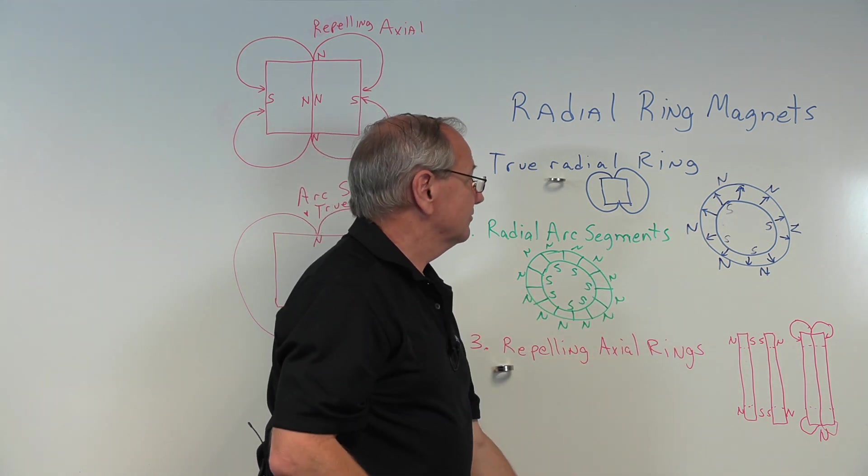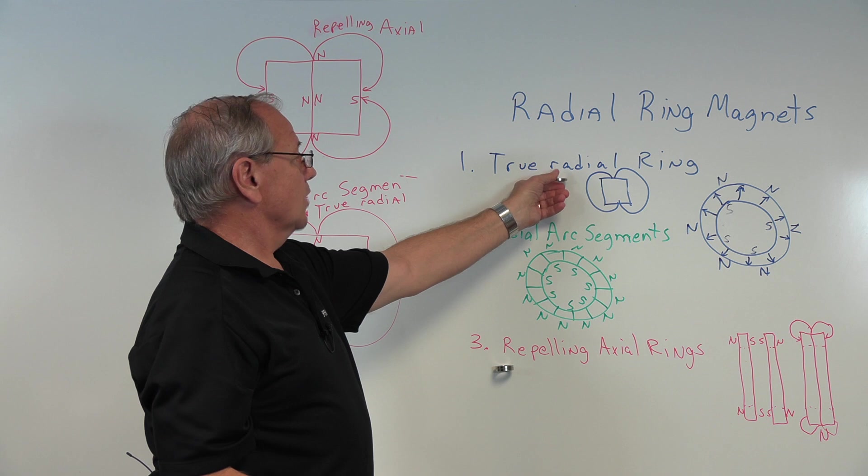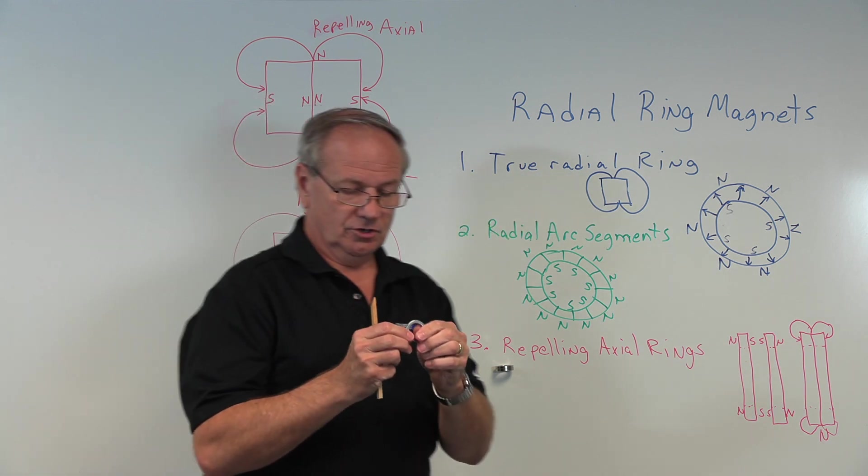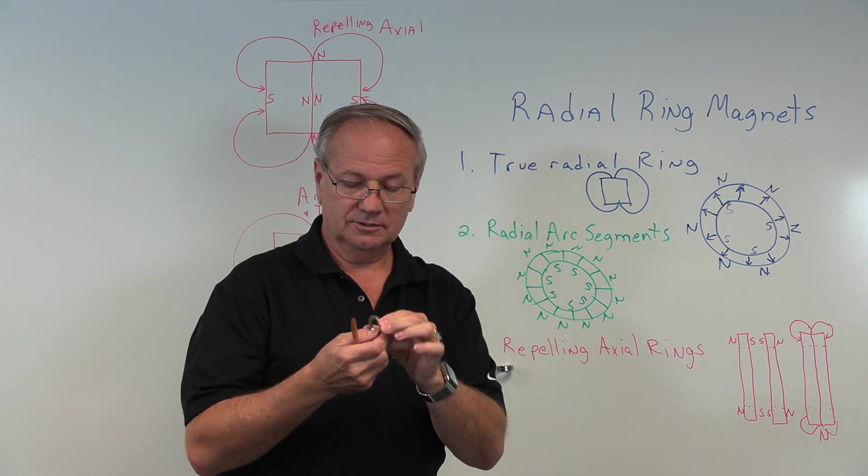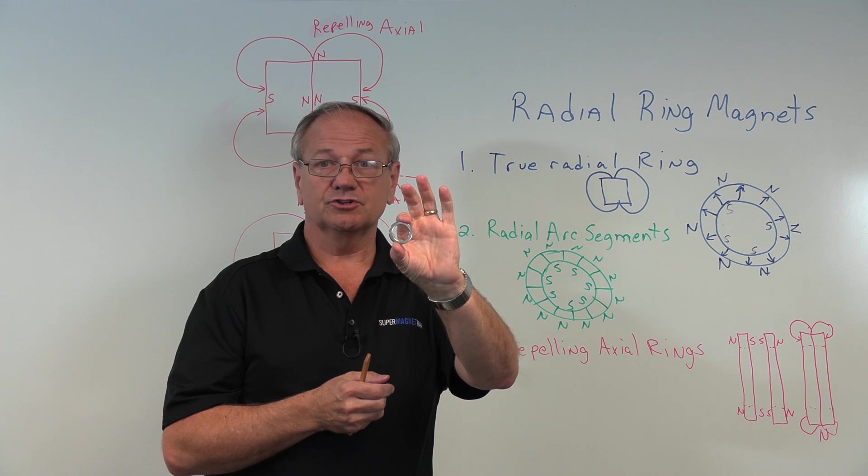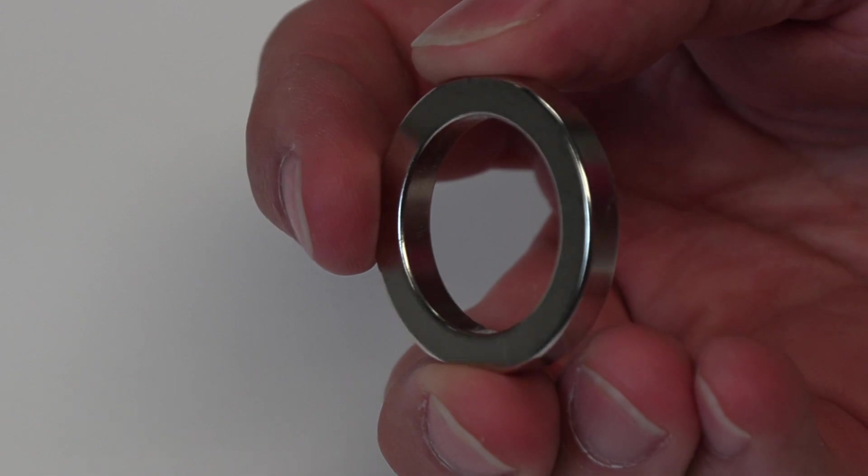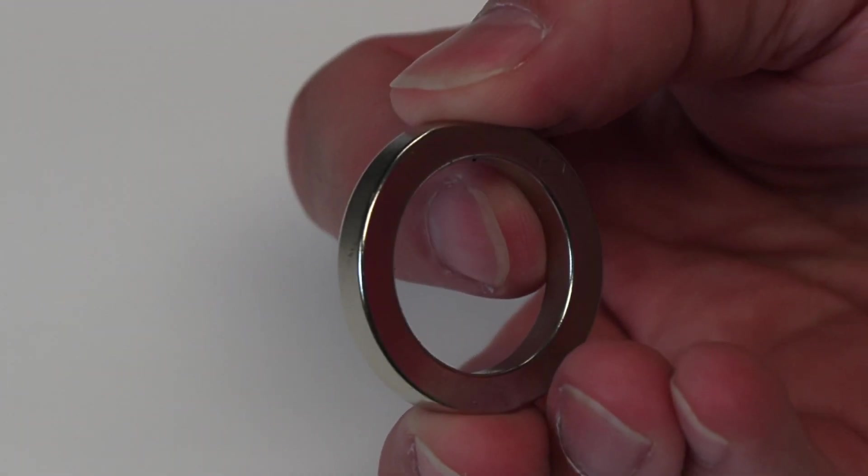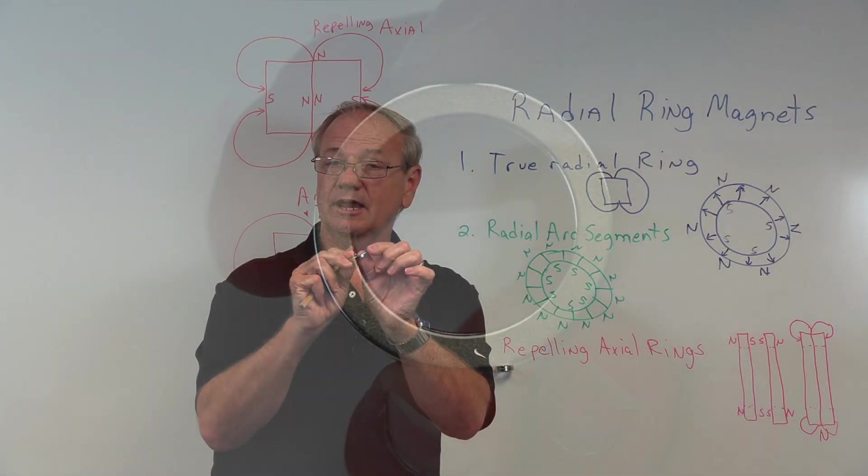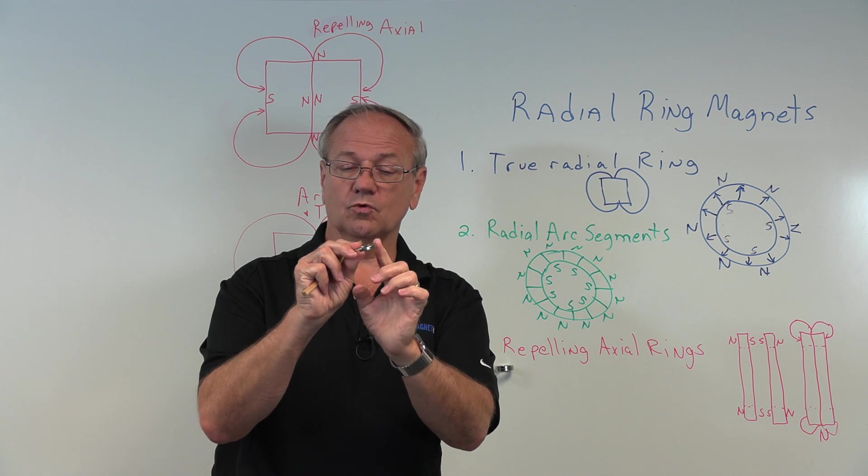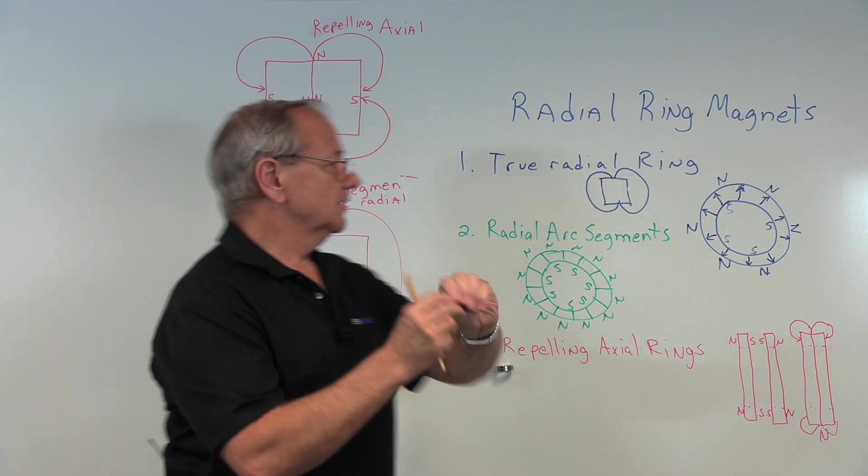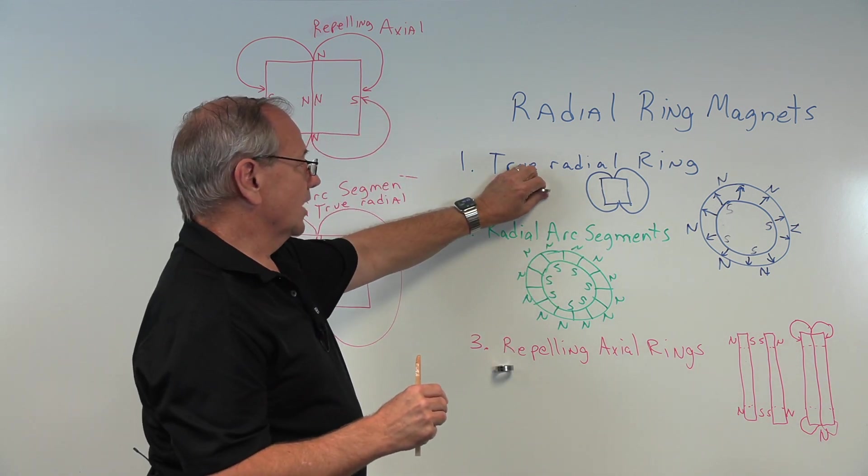Now we have the true radial. Several years ago, they finally perfected the ability to make a single-piece radial ring magnet, all one piece magnetized from inside to outside. On the inside, you have one pole, and on the outside, you have the other. So we're going to have north here and south here. That gives us a true radial ring.